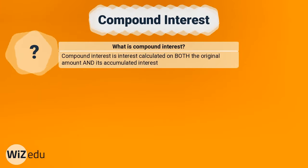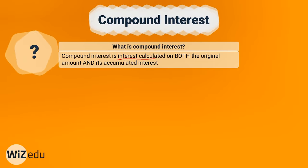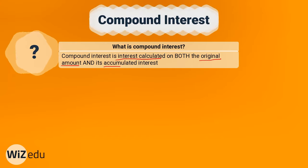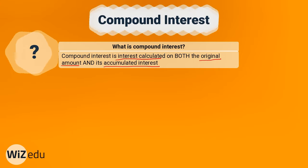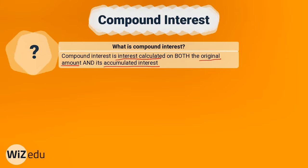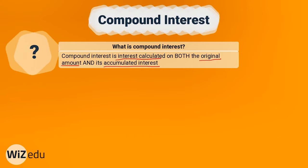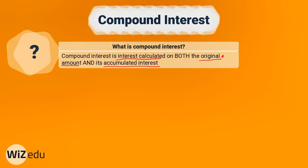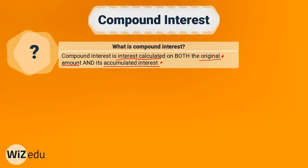So what exactly is compound interest? Well, compound interest is interest which is calculated both on the original amount that you've invested, as well as the interest that you've added to this original amount. So you can already see there's a stark difference between compound interest and simple interest, which we did previously.